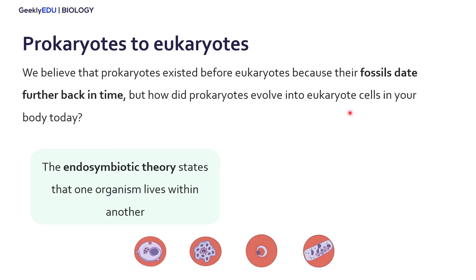How did these prokaryotic cells evolve into the eukaryotic cells that exist today? The endosymbiotic theory is basically here to explain how this happened. Looking at the word, 'endosymbiotic' is quite big, but we can break it down: 'endo' means in, 'sym' means together, and 'biotic' means living — so living together inside, basically.